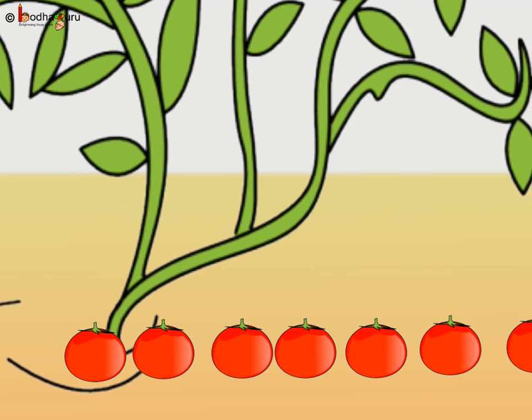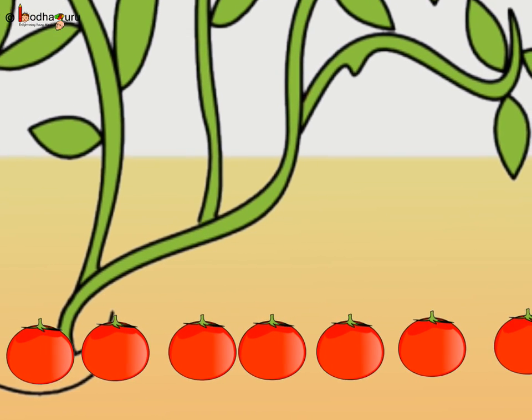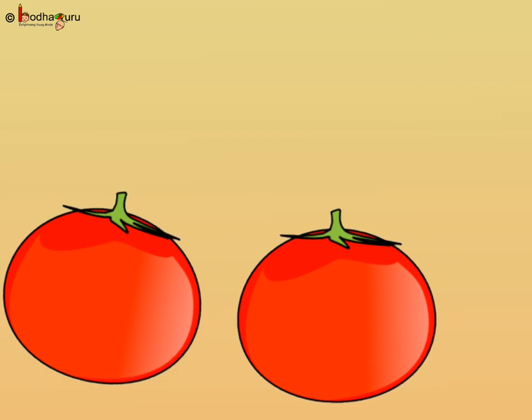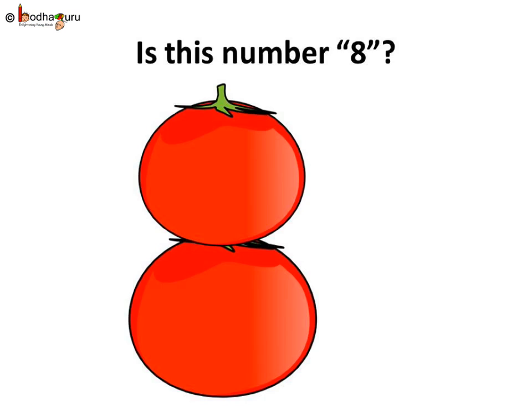Bholla got 8 tomatoes. This looks like number 8, isn't it? So, 8 has 2 rounds, one on the other like a round person.